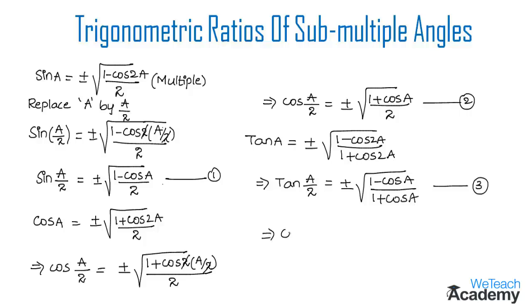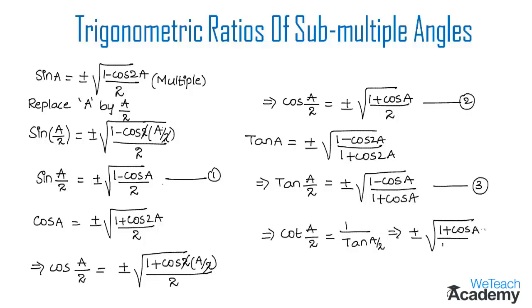Similarly, cot(a/2) can be written as 1 / tan(a/2), which gives cot(a/2) = ±√((1 + cos a) / (1 − cos a)). This is the formula for cot(a/2), and we name it equation 4.